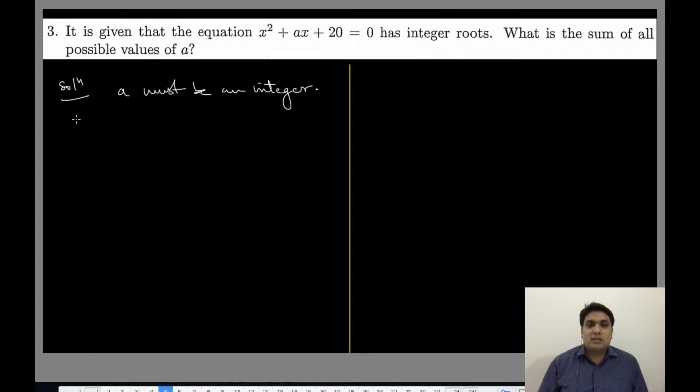Now if a is an integer for integer roots, the discriminant has to be a perfect square.